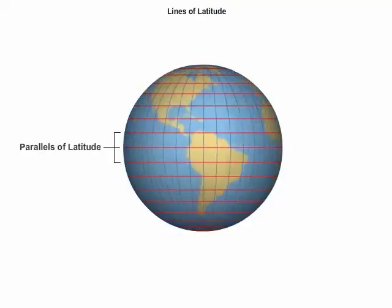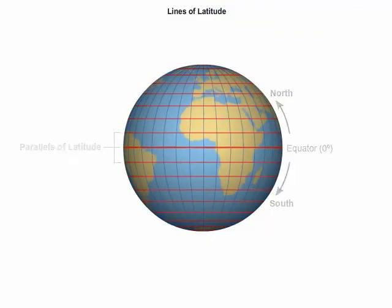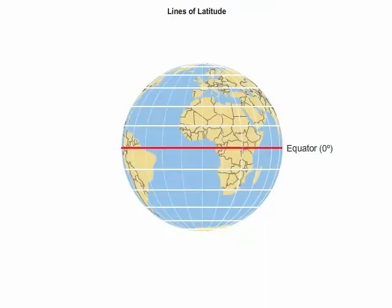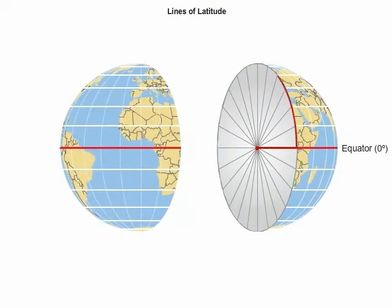The lines of latitude describe locations north and south of the equator. Latitude expresses location as an angular measurement. The globe, like any circle or sphere, encompasses an angle of 360 degrees. The equator is the starting point for measuring latitude because it divides the Earth into two equal halves.